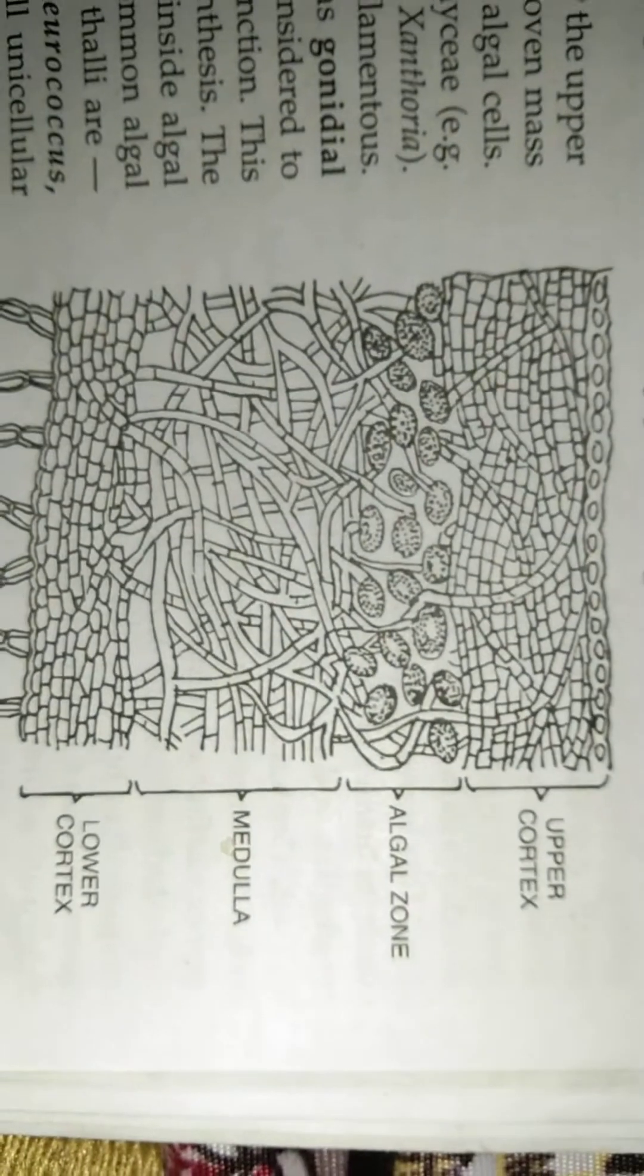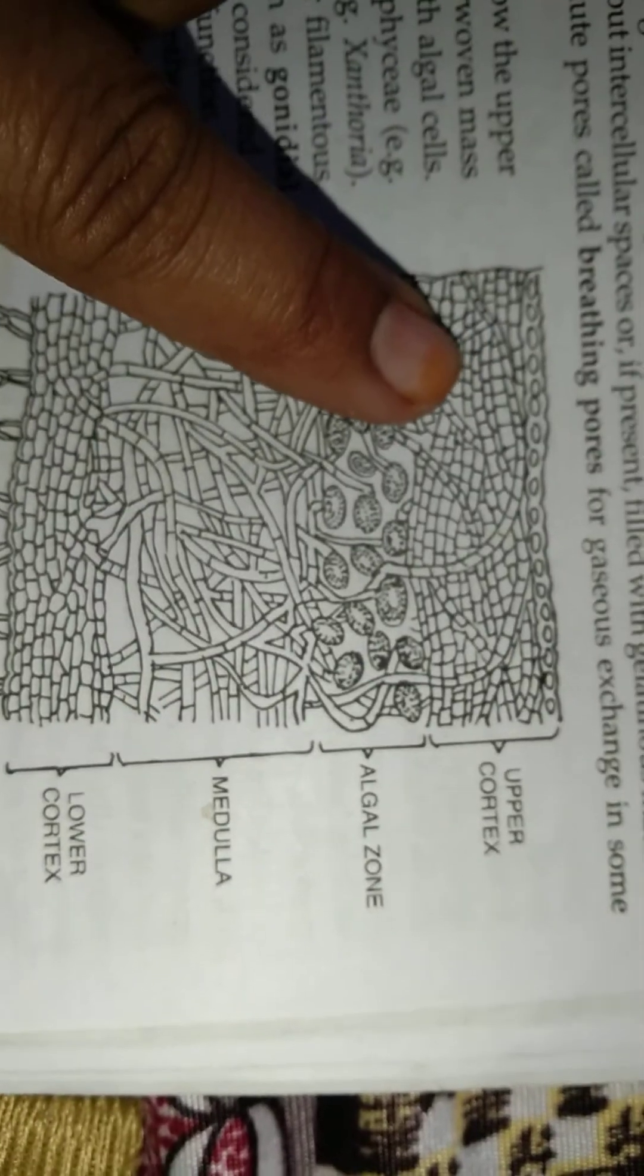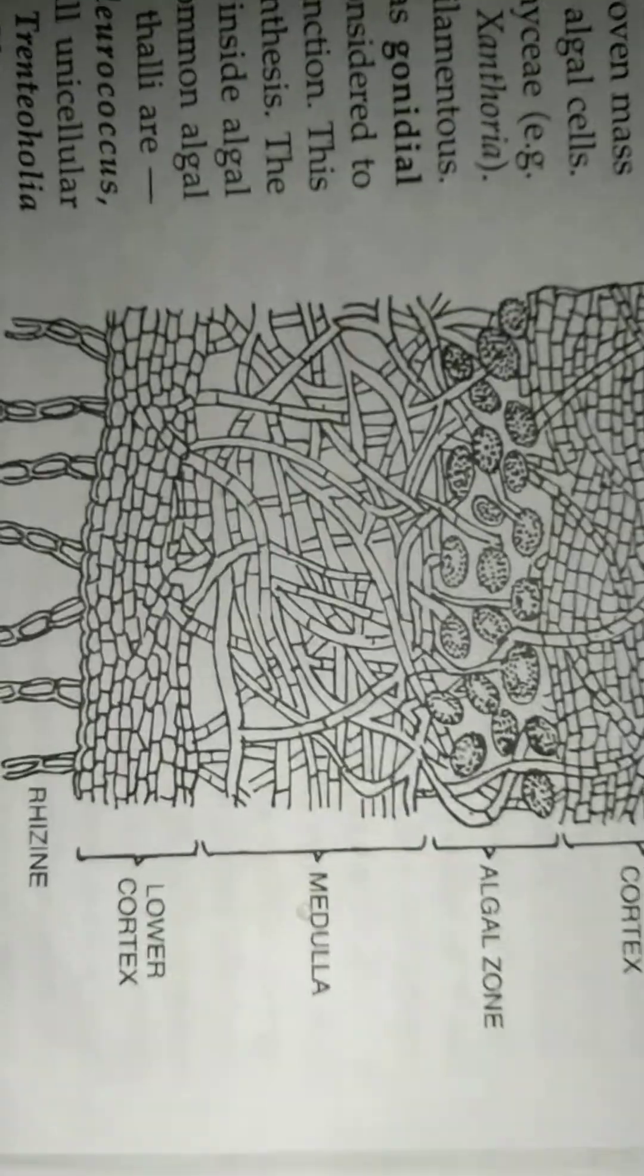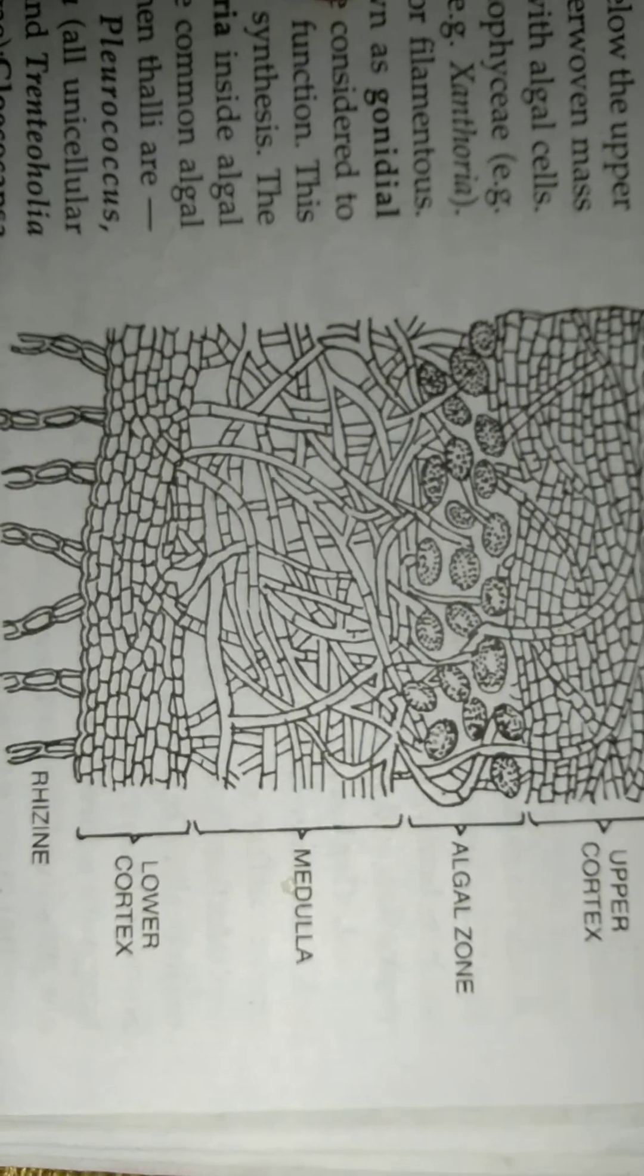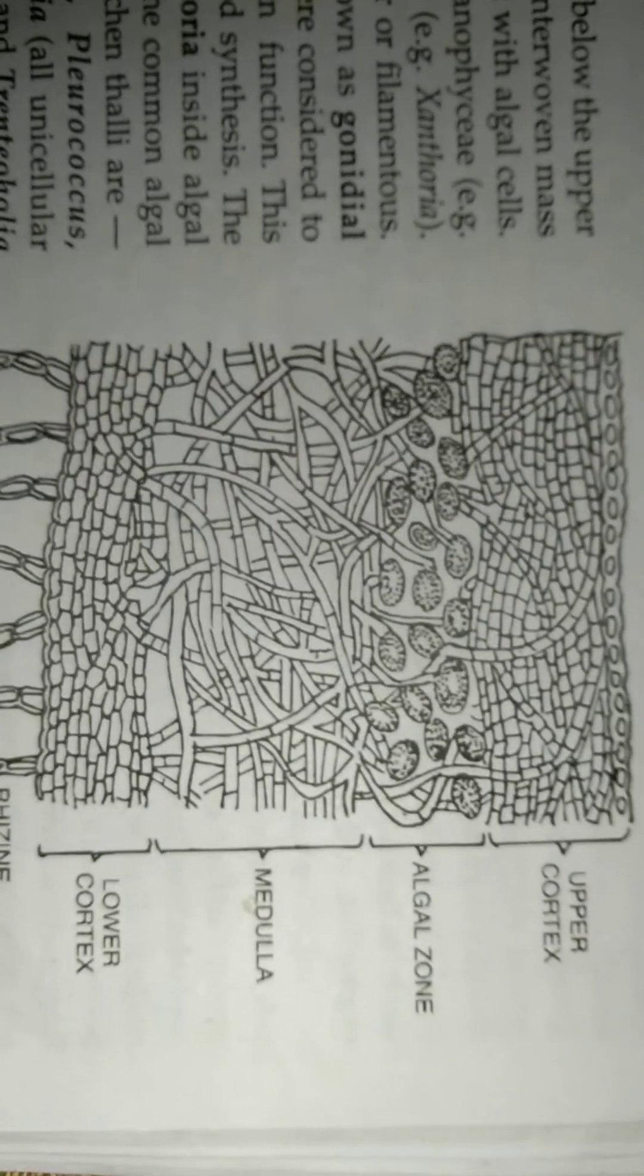This is the upper cortex. It is the outer thick protective zone made up of the compactly interwoven mass of the fungal hyphae on the upper surface of the thallus.